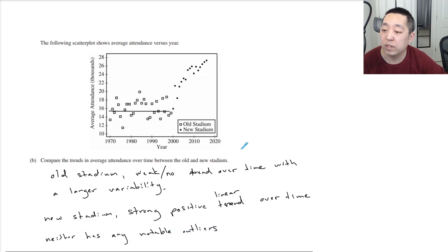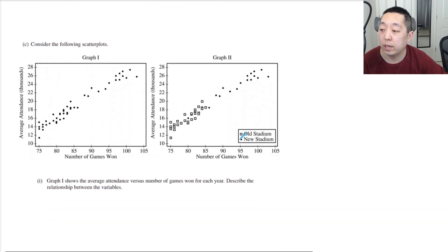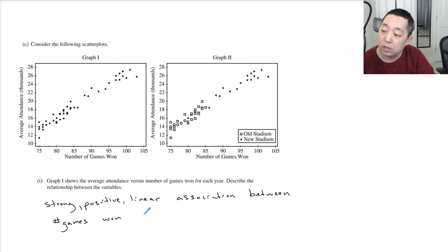Okay, I think that's pretty much everything I would say. Considering the following scatterplots, graph one shows the average attendance versus number of games won for each year. Describe the relationship between the variables. I would say strong positive linear trend, strong positive linear association between number of games won and average attendance with no noticeable outliers.